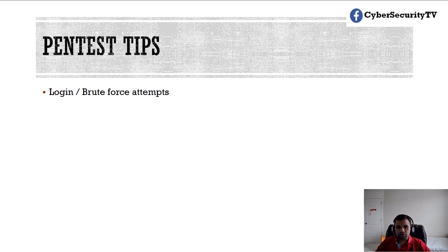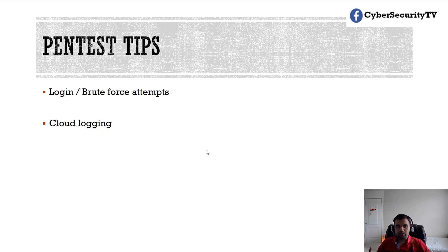Check if there is a threshold or alarm set for that event. For example, if the system receives 100 attempts per minute, it should trigger an alarm — that's just an example, it could be anything. That alarm should trigger the SOC ops or IT team to see and prevent the attack from further exploiting the system. Also check cloud logging — if they're using CloudTrail or CloudWatch — and verify those logs have all the necessary information, like where the attack originated and which system is being attacked.